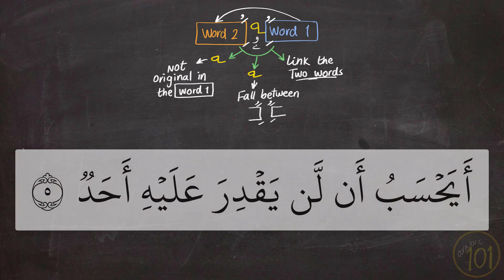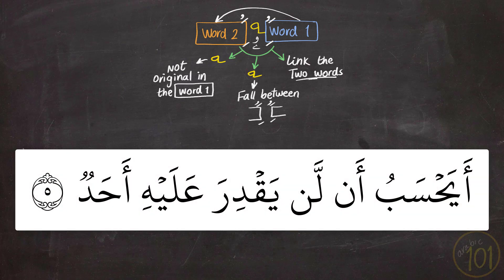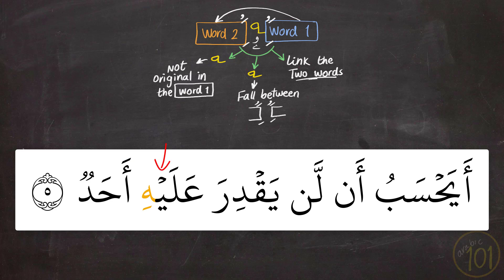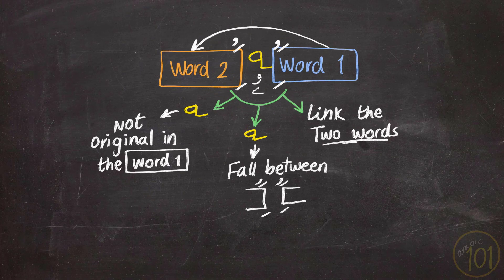Last example: أَيَحْسَبُ أَلَّنْ يَقْدِرَ عَلَيْهِ أَحَدُ. Here we have ها — it is not an original part of the word, but before it there is سُكُون. So in this case, we are not allowed to extend or add إشباع. To summarize: the ها has to be an added part (not original), it has to come between two letters that have حركة (فتحة، ضمّ، كسر), and you have to keep on reading for إشباع to happen.